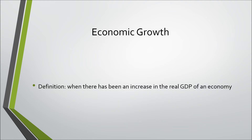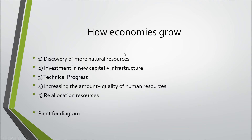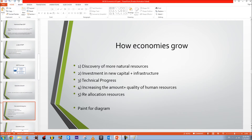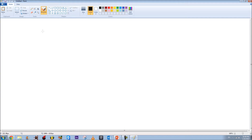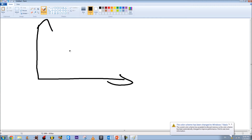Moving to 6.3.2 — economic growth — defined as an increase in the real GDP of an economy. How do economies grow? First, discovery of more natural resources. Second, investment in new capital and infrastructure. Third, technological progress such as new machines. Fourth, increasing the amount and quality of human resources. Fifth, reallocation of resources. If an economy grows, this can be shown using the PPC curve.